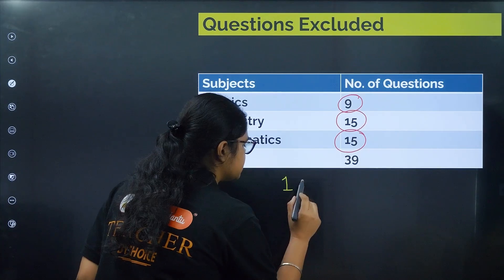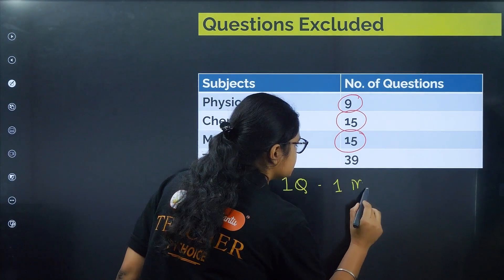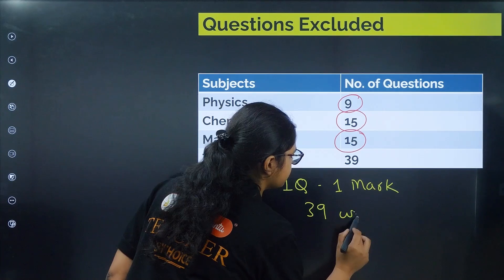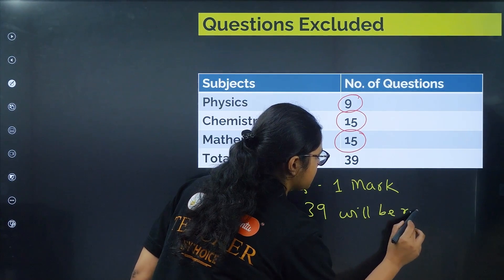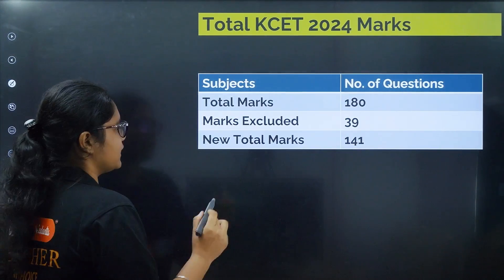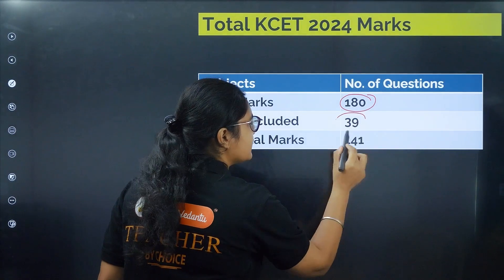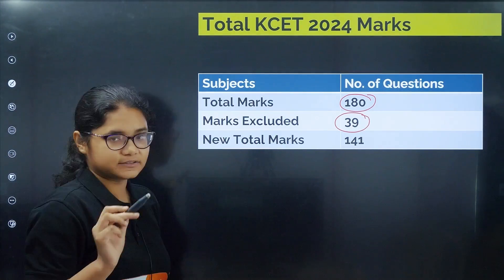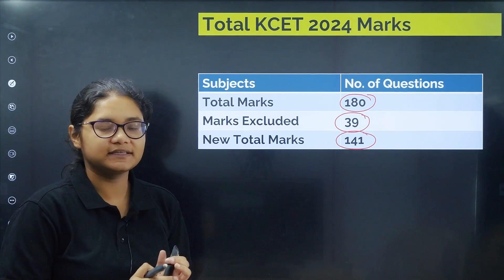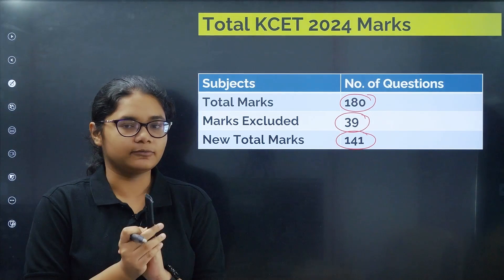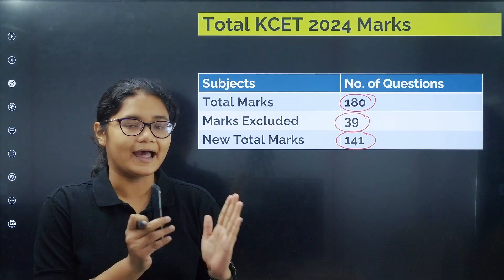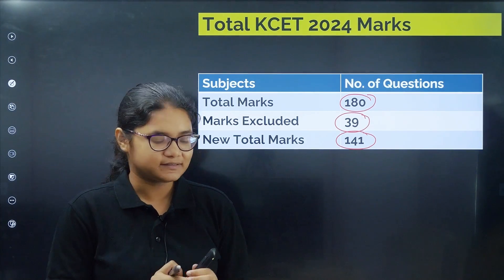In KCET, each question carries one mark, so 39 marks will be reduced from the total. The total marks which were earlier 180 will now become 141. Whatever marks you get in your KCET 2024 examination will be out of 141, not 180. This point is important to understand.